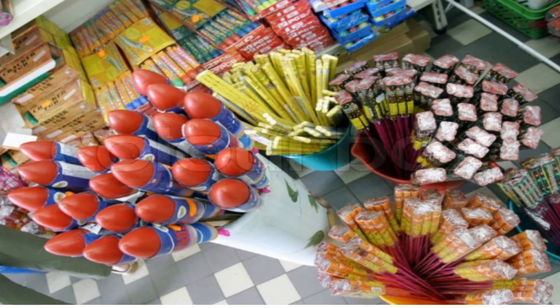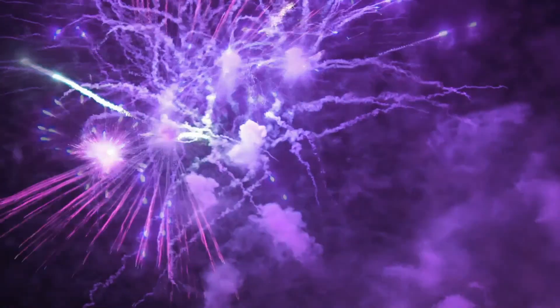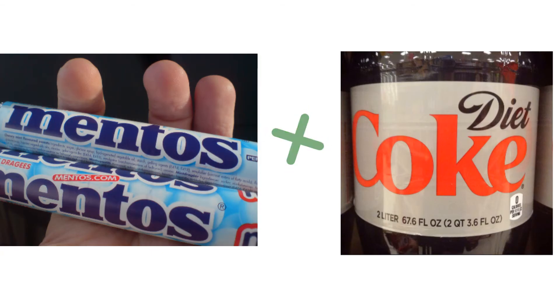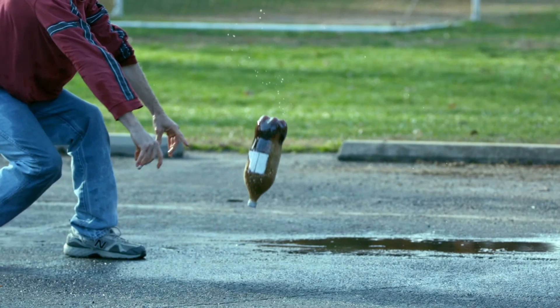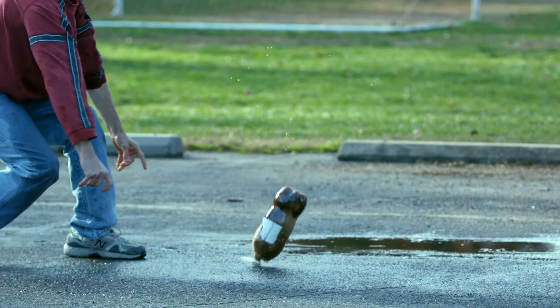The fireworks have chemical potential energy. When the chemical reaction begins, the stored energy is released. And finally, one more classic example of chemical potential energy — whenever you mix Mentos and Diet Coke.